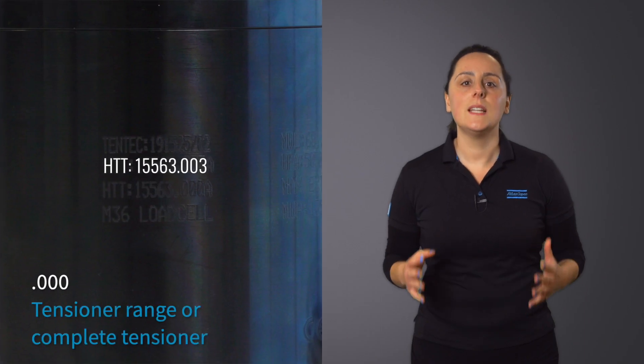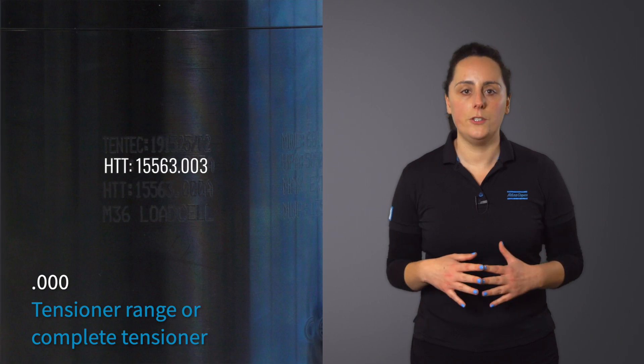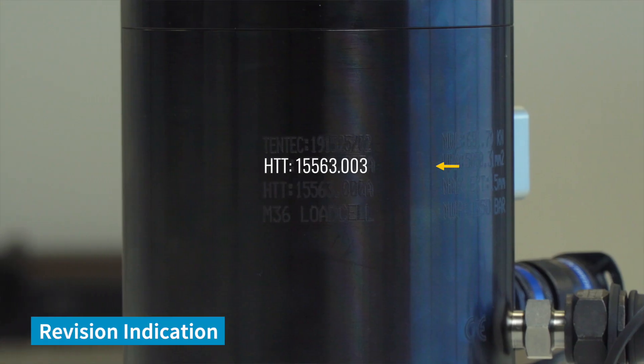However, if it is dot triple zero, then it is either the tensioner range or the complete tensioner. The final part is the letter which indicates what revision the tool is at.